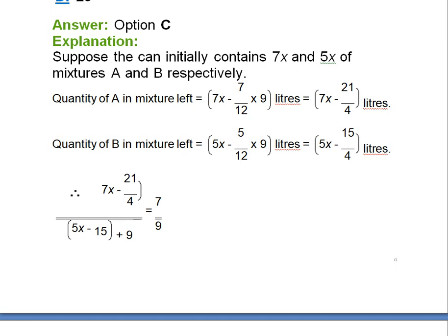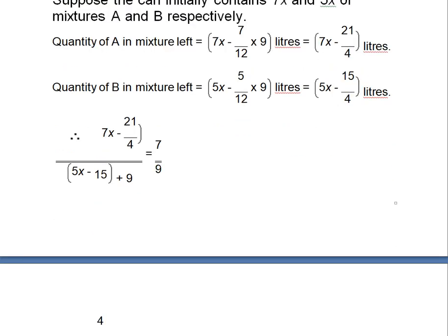Quantity of B is 5x minus 5/12 into 9 liters, that is 5x minus 15/4. So what you will do is you will simply divide both the quantity of A and B by each other.